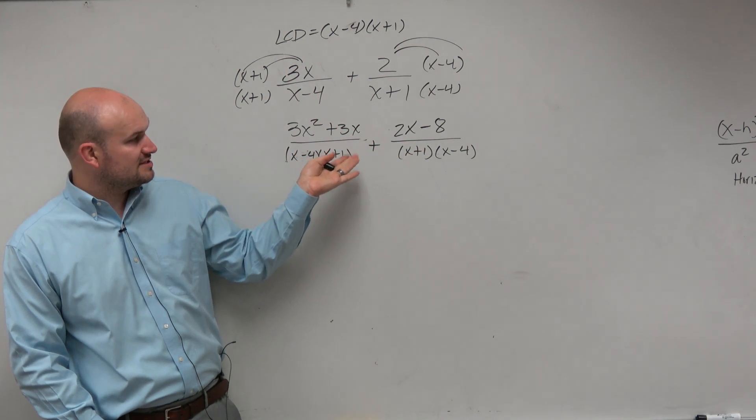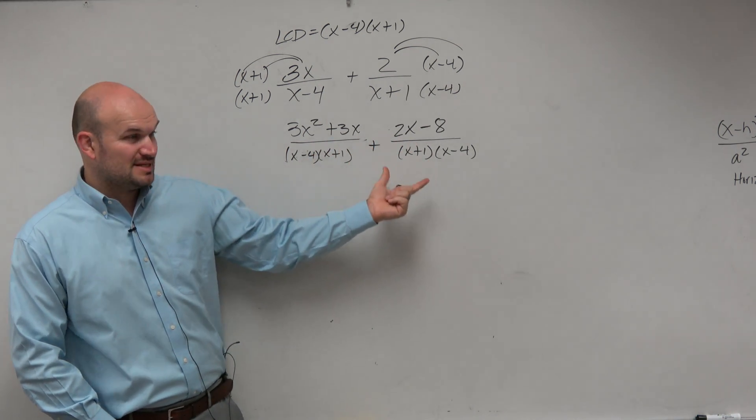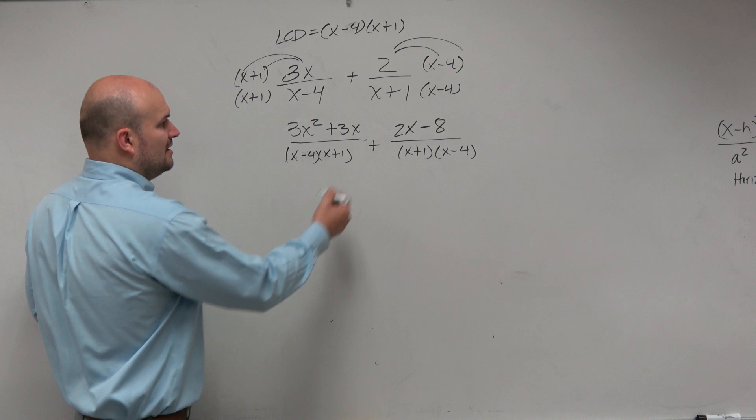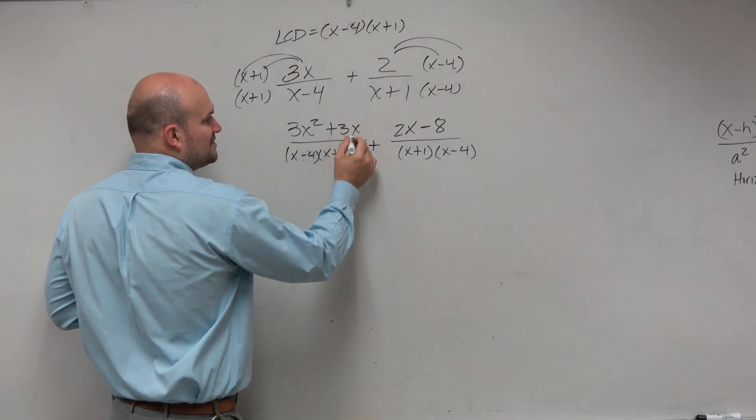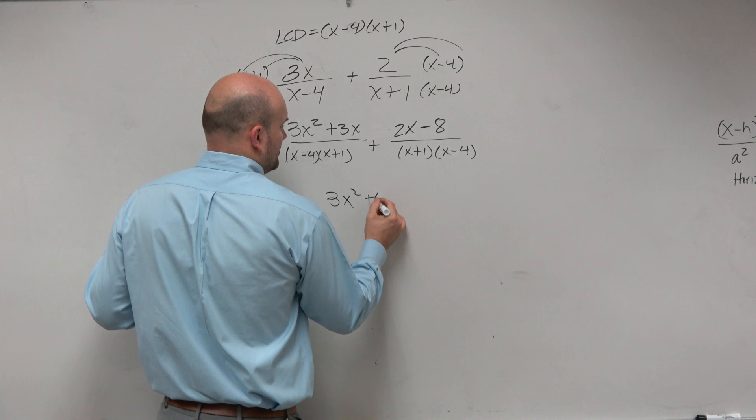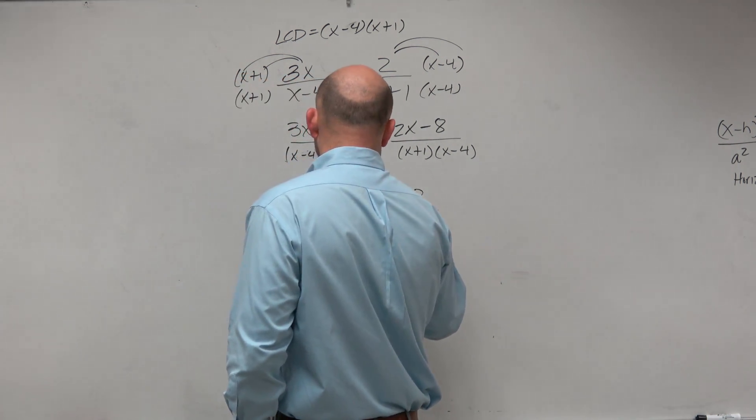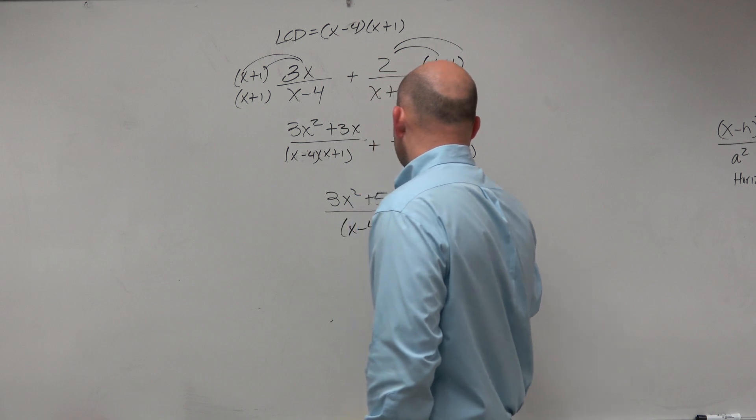now what we have is we have the same denominators. So just like 1 third plus 1 third is 2 thirds, these have the same denominators. Now we can just combine the numerators. And the only like terms I have is 3x and 2x. So my final answer is 3x squared plus 5x minus 8, all over my common denominator, x minus 4 times x plus 1.